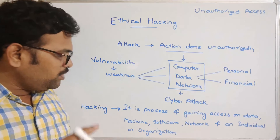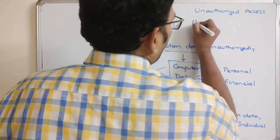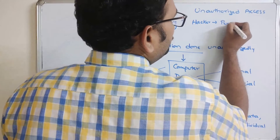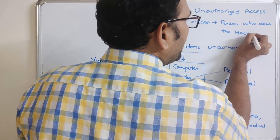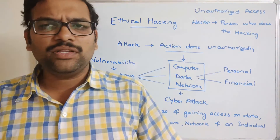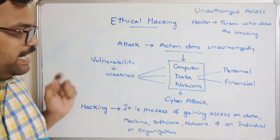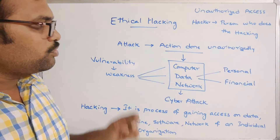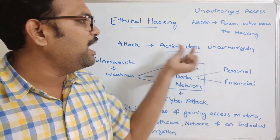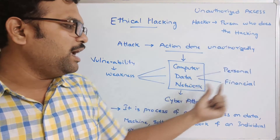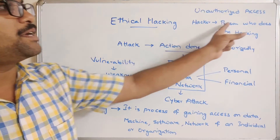The person who does all these things — who does this hacking — is known as a hacker. There are different types of hackings and different types of hackers, which we'll discuss in further sessions. To summarize: if a system or network has any weakness, there is a chance of an attack — an action done unauthorizedly — which we call a cyber attack. This process of gaining access is called hacking, and the person who does it is a hacker.